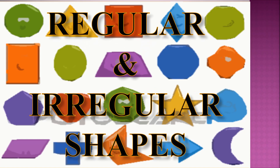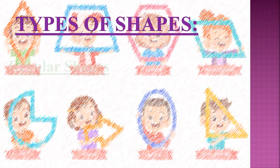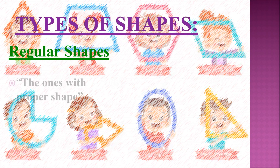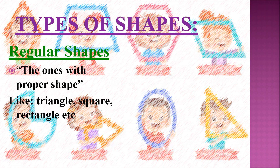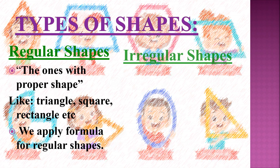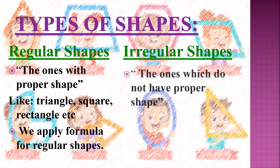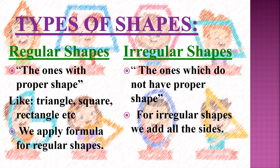Here I am going to tell you the difference between regular and irregular shapes. Types of shapes: regular shapes are the ones with a proper shape, like triangle, square, rectangle, etc. We apply a formula for regular shapes. Irregular shapes are the ones which do not have a proper shape. For irregular shapes, we add all the sides.